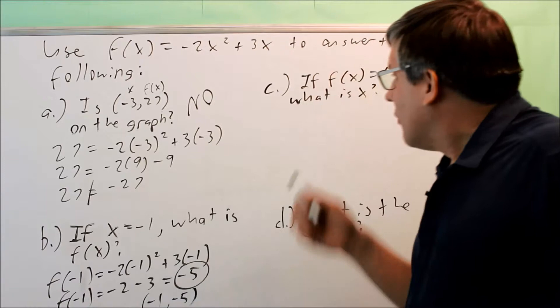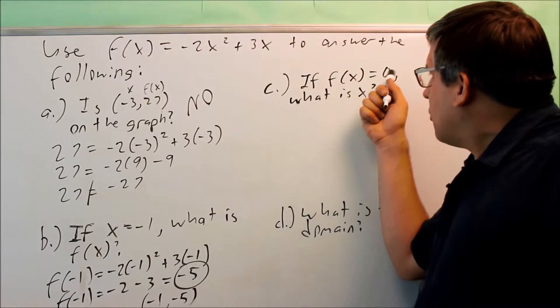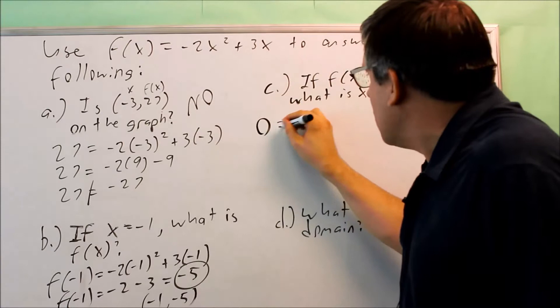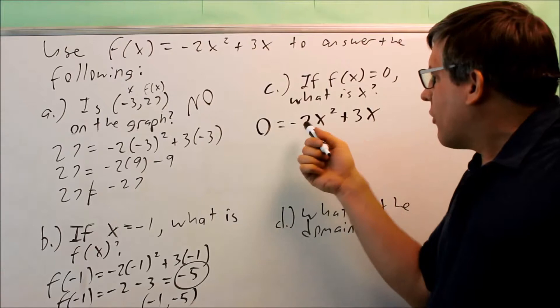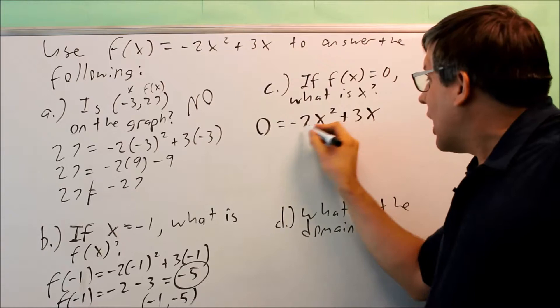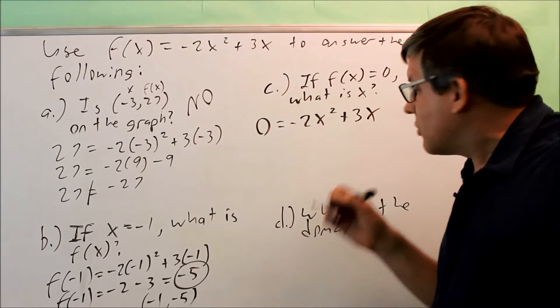For c, if f(x) is equal to 0, what is x? That's saying put 0 into here in place of f(x). So 0 equals -2x² + 3x. Since I have a quadratic that's set equal to 0, the way to solve these is by doing factoring. You look for a common factor you can pull out.